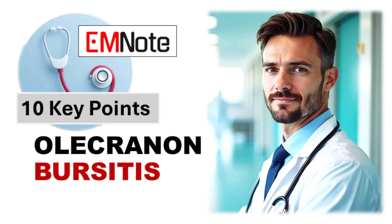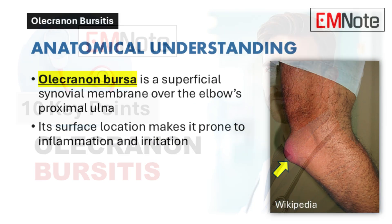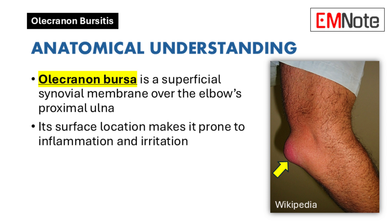Anatomical Understanding: The olecranon bursa is a superficial synovial membrane that overlies the proximal ulna at the elbow. This superficial location makes it particularly susceptible to inflammation and irritation, creating a distinctive presentation that clinicians should recognize.